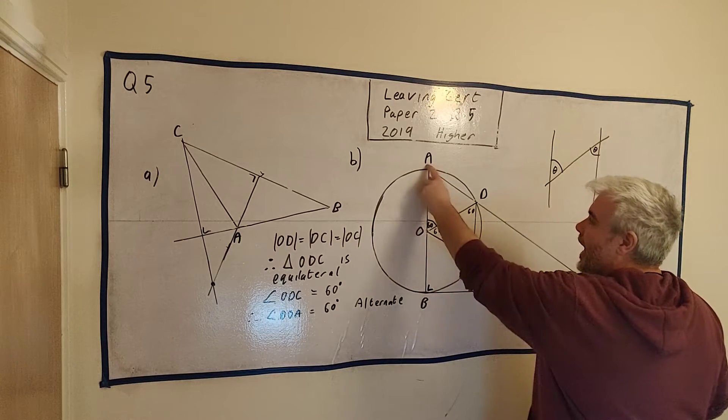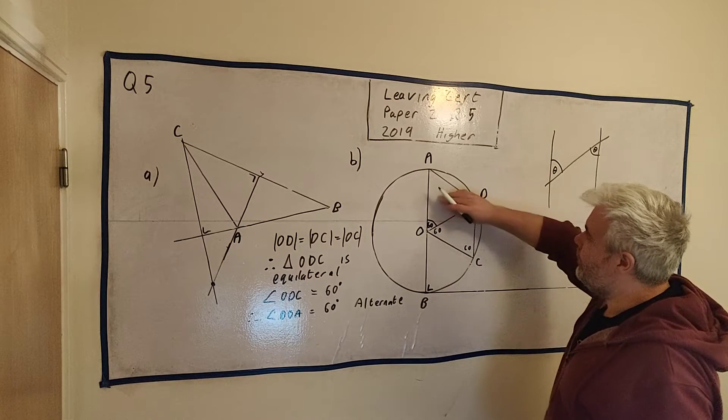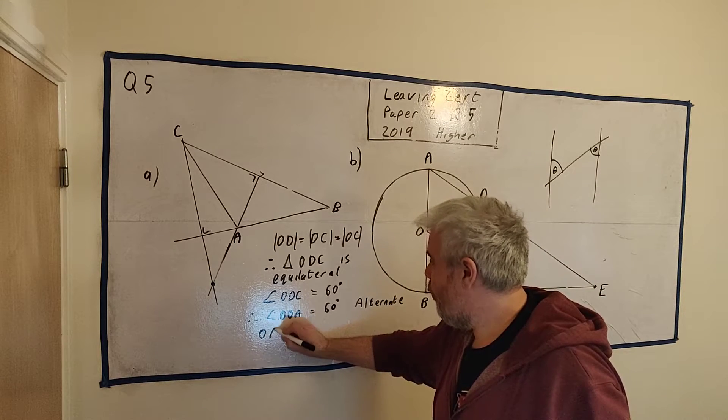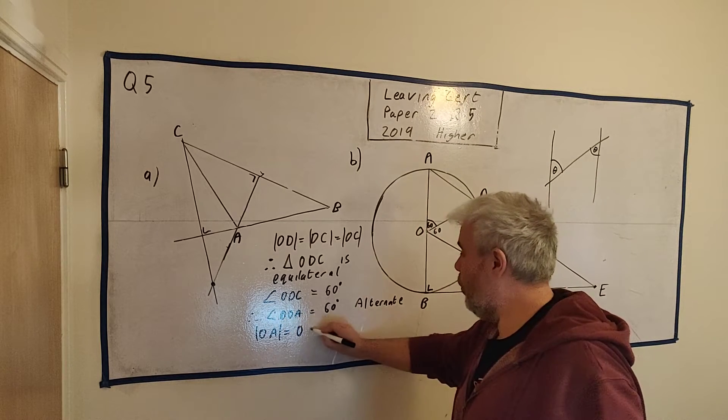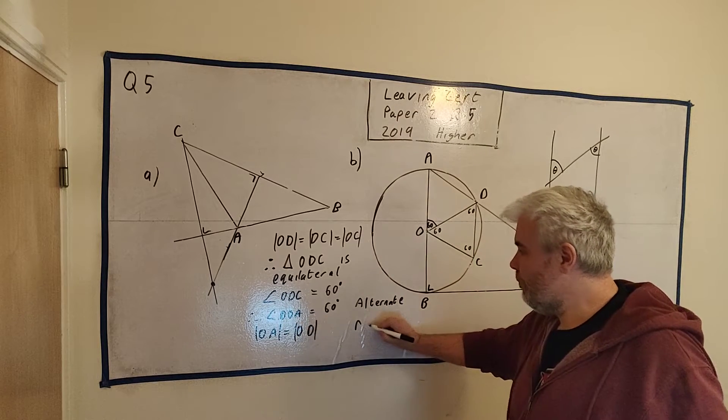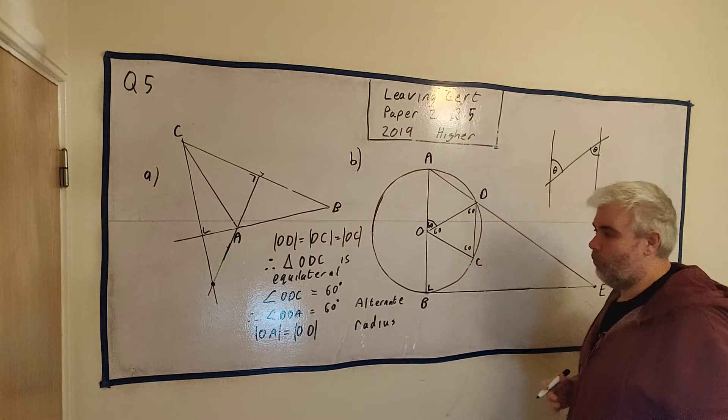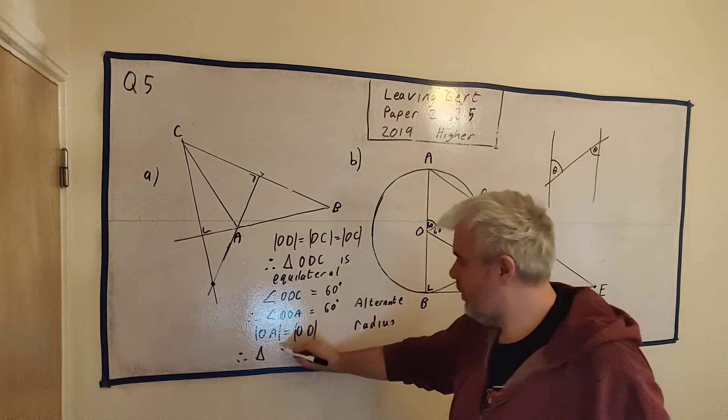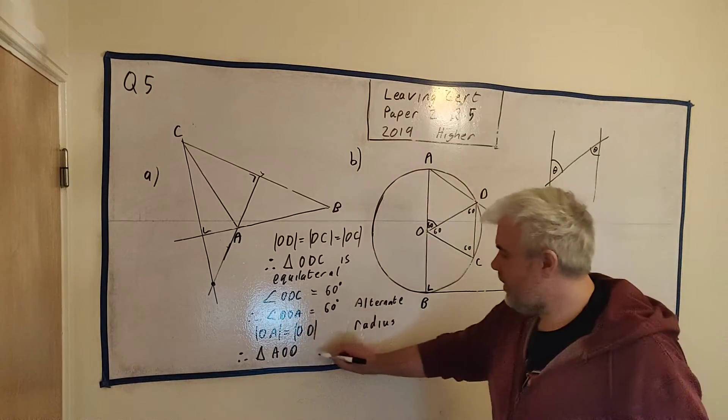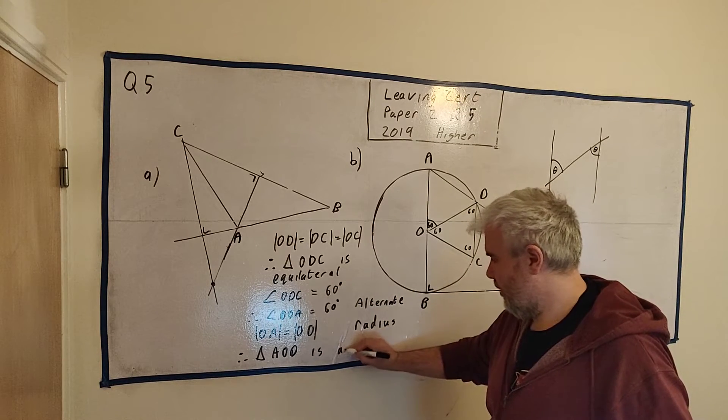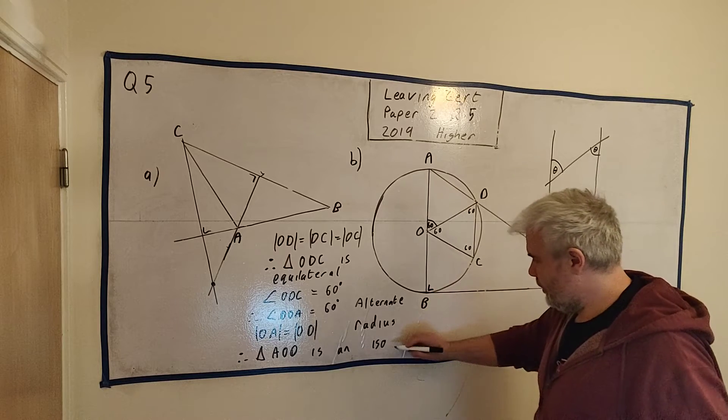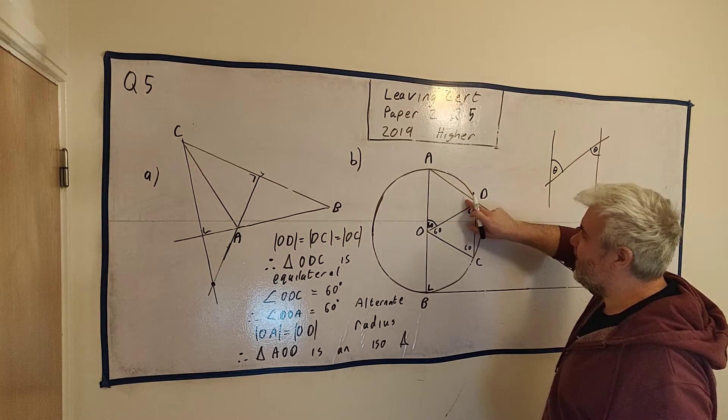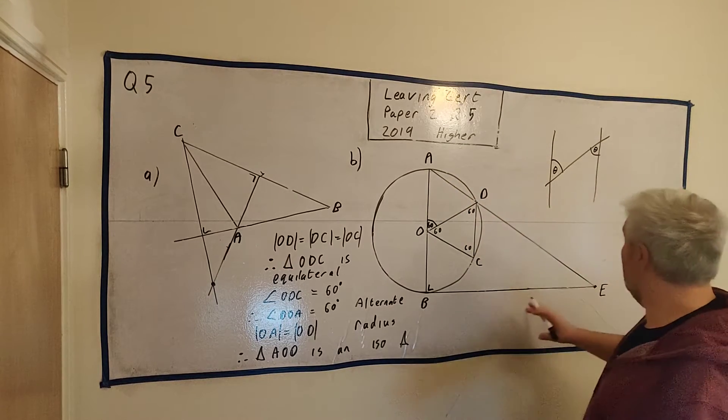But now we have a triangle here, AOD. And we know a couple of things. AO is equal to OD. They're both radius. Let me write that out. OA is equal to OD. We might even write little explanations here, like radius, just to tell people why that is. And therefore, the triangle AOD is an isosceles triangle. Which means that this angle and this angle here are equal. And I can even write that again.